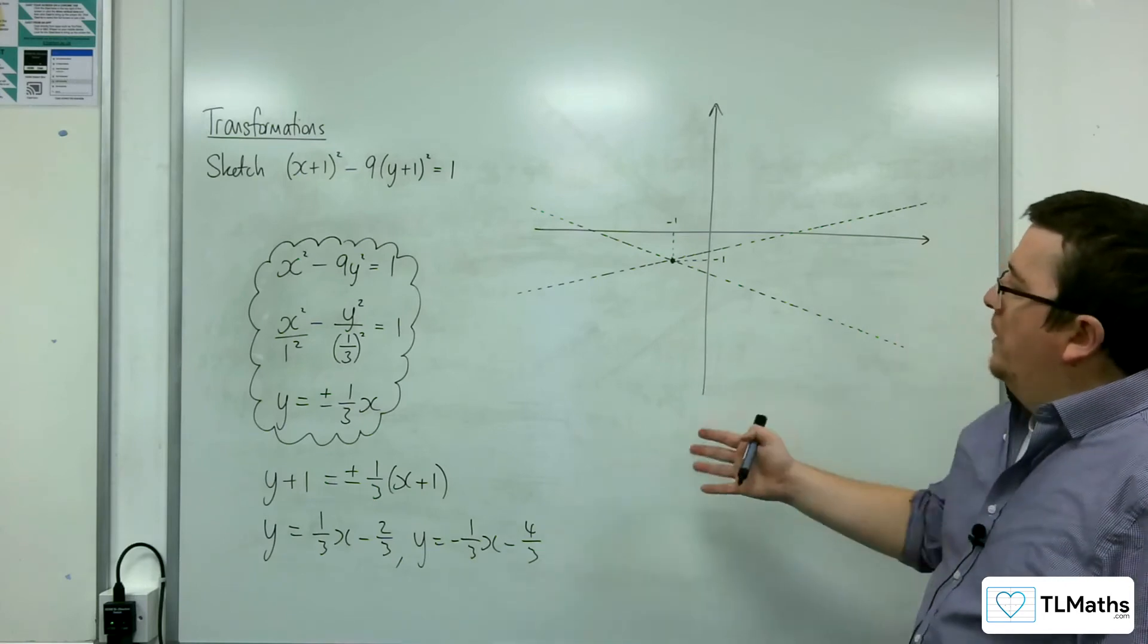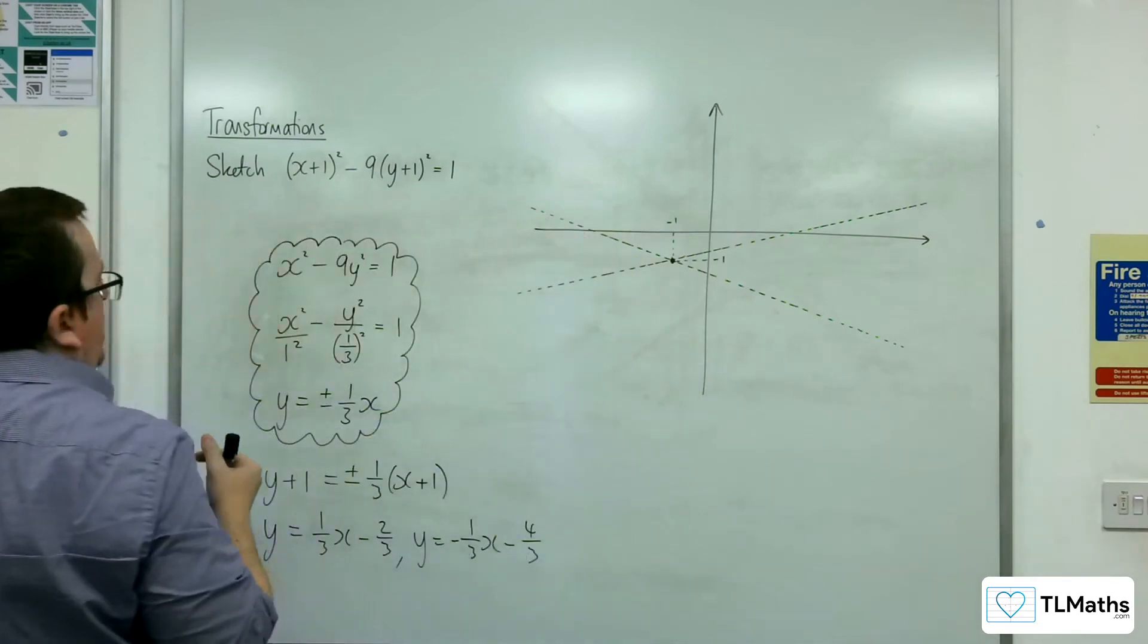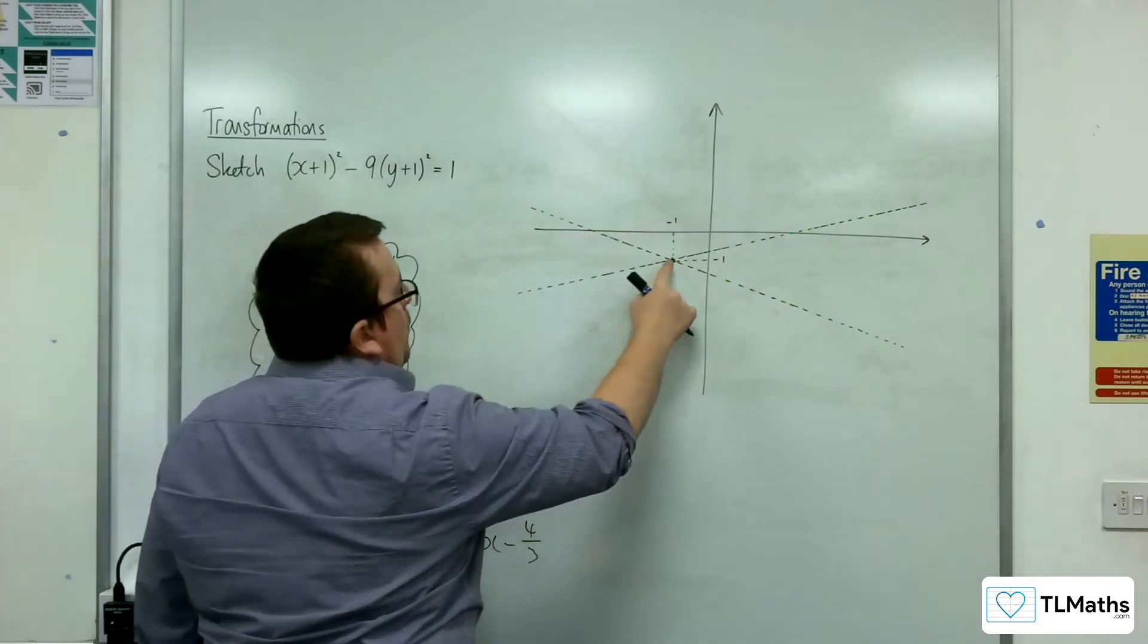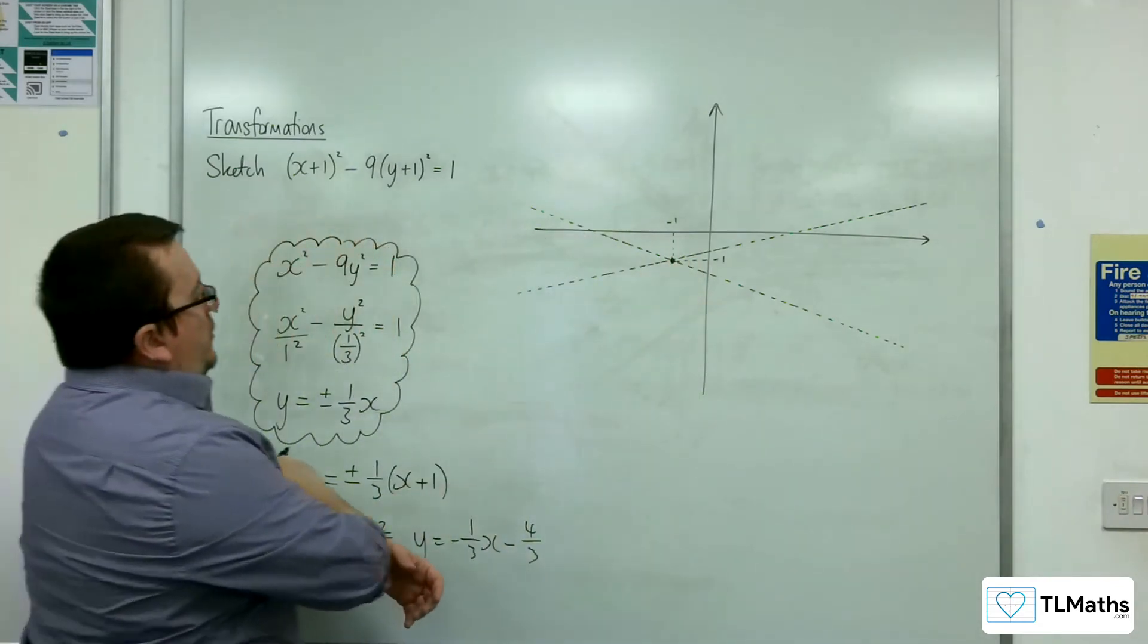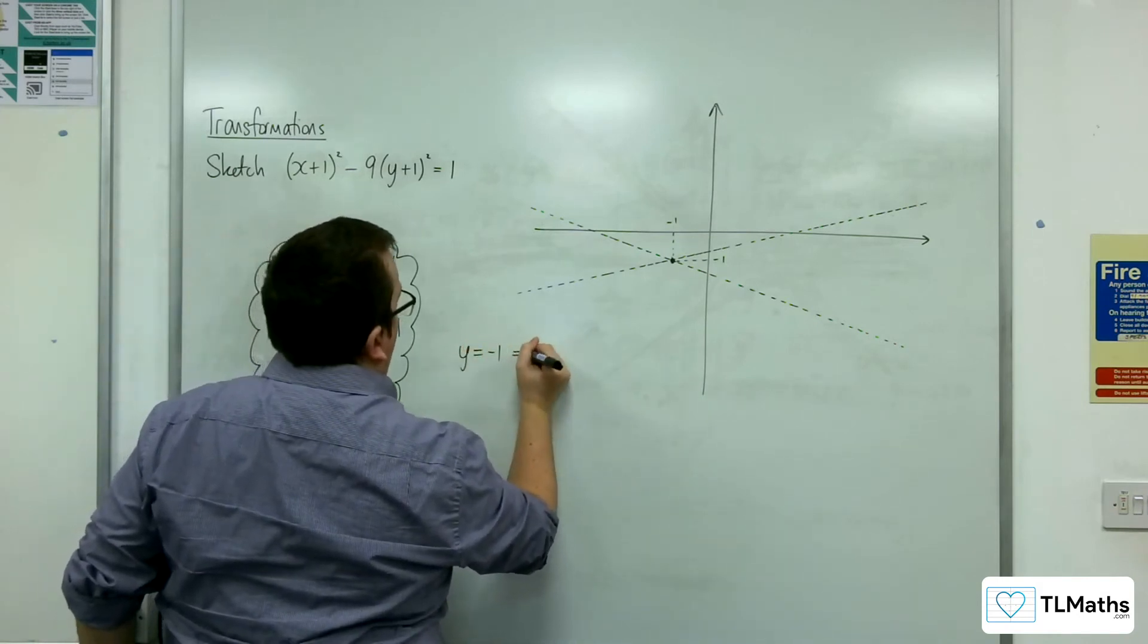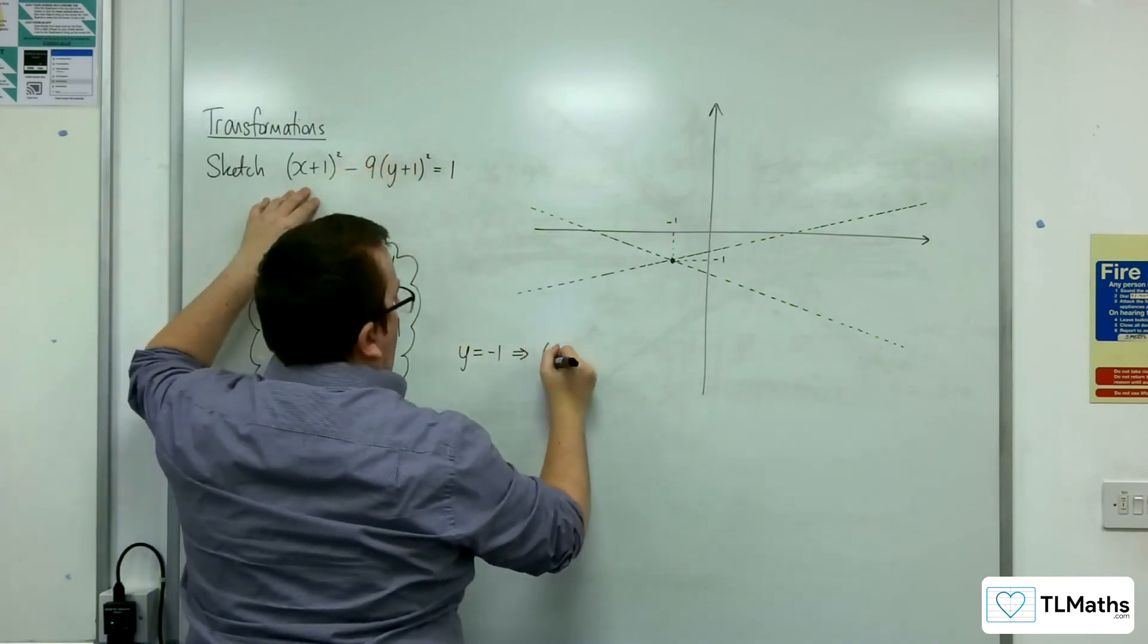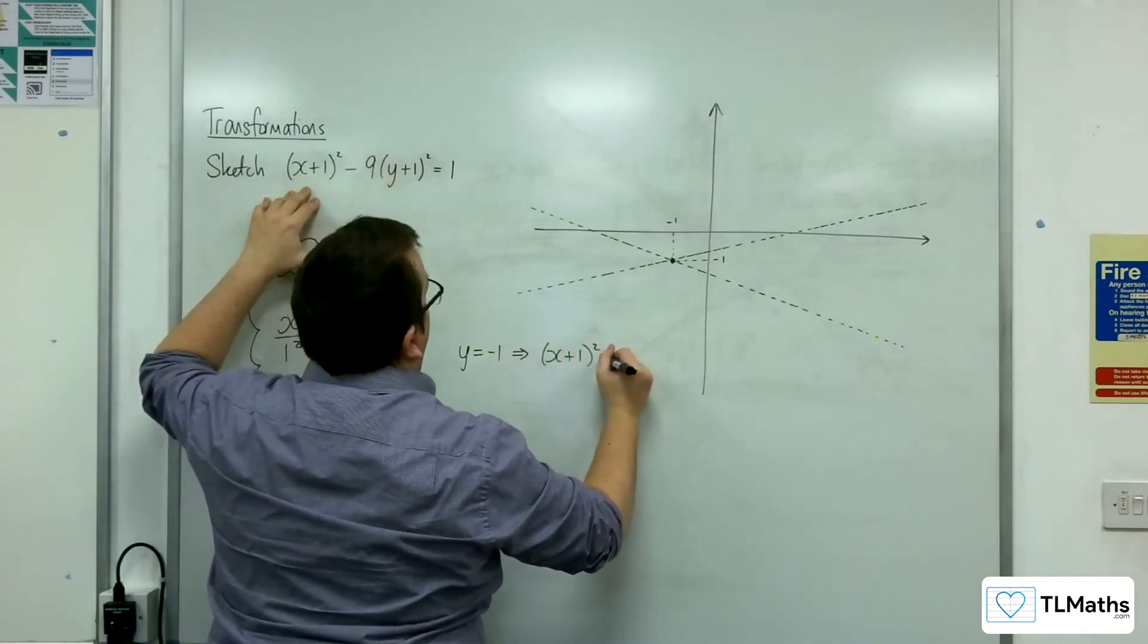So next up, I want to work out where the two vertices of my hyperbola are. So that happens when y is equal to -1. So I'm going to substitute y = -1 into my equation. It knocks out that term there. So I get (x+1)² = 1.